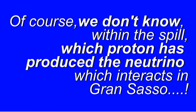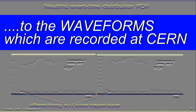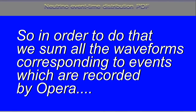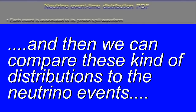So we can perform this measurement of the neutrino velocity in a statistical way by comparing the distribution of neutrinos at Gran Sasso to the waveforms which are recorded at CERN. In order to do that, we sum all the waveforms corresponding to the events which are recorded by OPERA. And this has to be done separately for the two extractions because, as I mentioned, they have a different timing. And then we can compare this kind of distributions to the neutrino events.